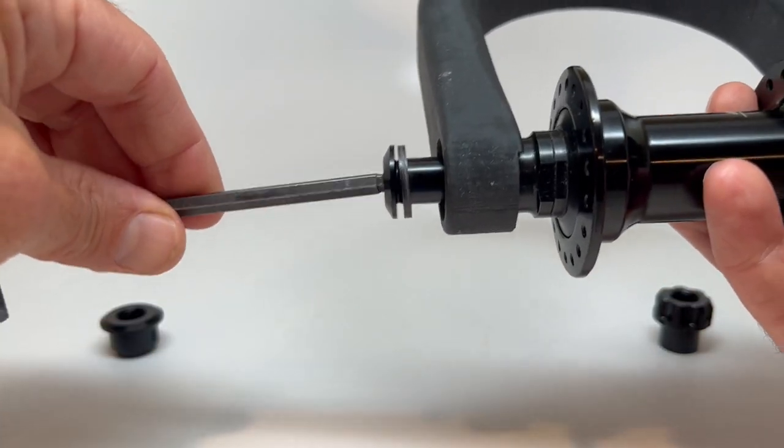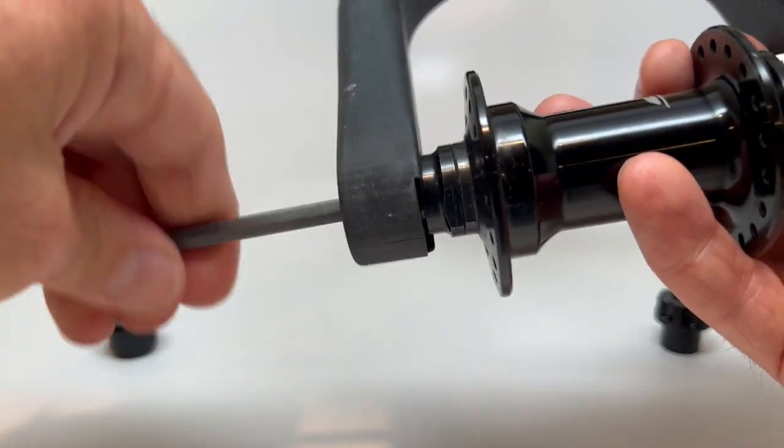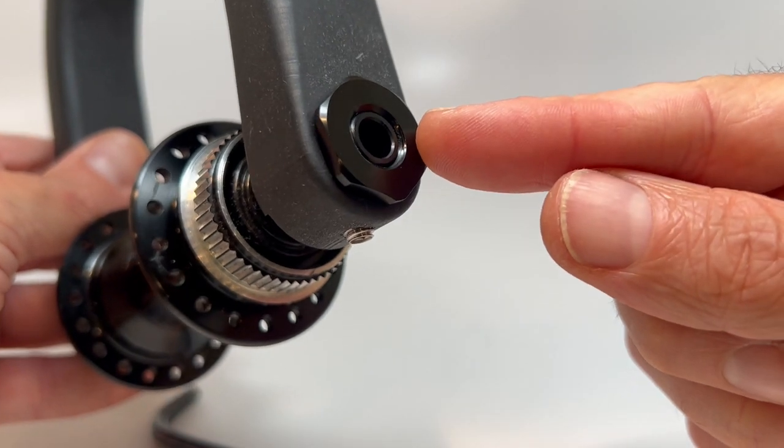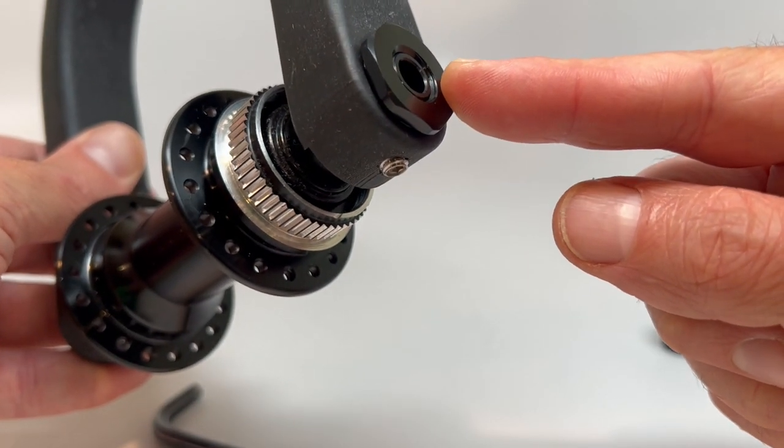Once that through axle is installed, you can check on the other end. If the threads come right up to the end of the insert, you're all set.